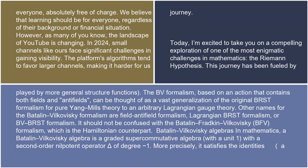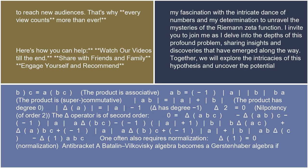In mathematics, a Batalin-Vilkovisky algebra is a graded supercommutative algebra with a unit 1, with a second-order nilpotent operator delta of degree minus 1. More precisely, it satisfies the identities: A(BC) = (AB)C — the product is associative; AB = (−1)^(|A||B|) BA — the product is supercommutative; the product has degree 0; delta(A) has degree |A| − 1 — delta has degree minus 1; delta² = 0 — nilpotency of order 2.